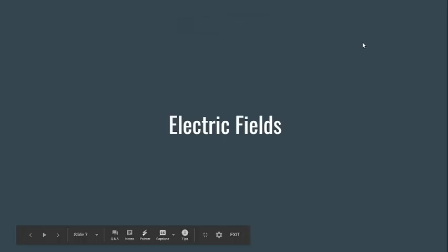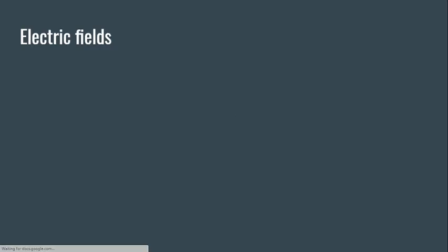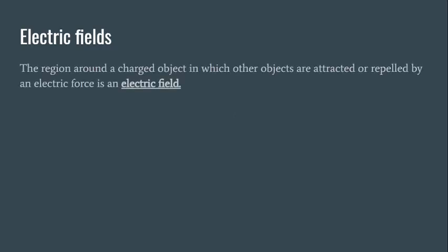Yesterday, we were talking about electrostatics and how we see electrostatics and what electrostatics do. We're going more of that, but we're also taking it from the idea of electric fields today. Right here, we got our first note. Make sure you're writing this down so you can show me today. It says the region around a charged object in which other objects are attracted or repelled by an electric force is called an electric field. So all around charged objects, there is a force or a space of influence, and that space of influence is called our electric field.